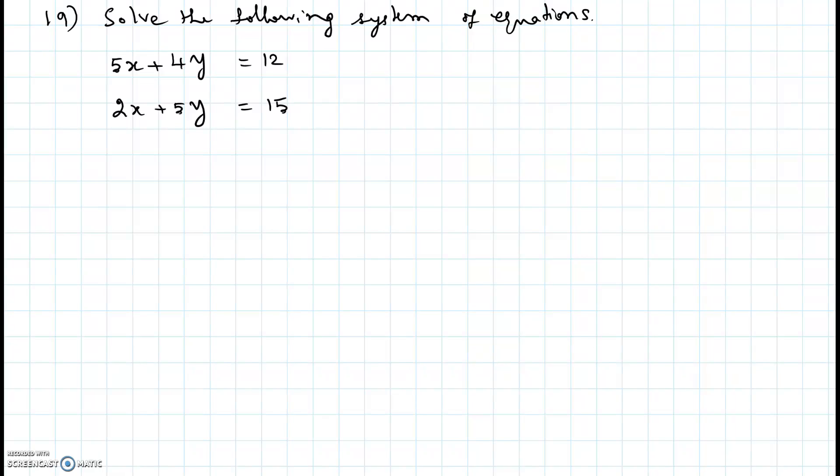Solve the following system of equations: 5x plus 4y equal to 12, 2x plus 5y equal to 15. We will name the two equations as equation 1 and 2 for our reference.